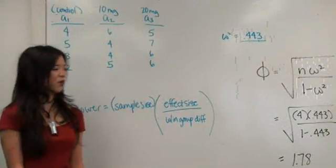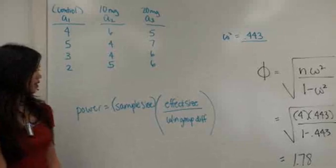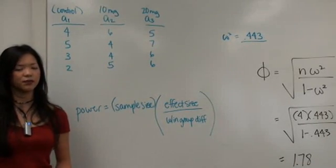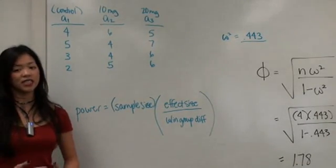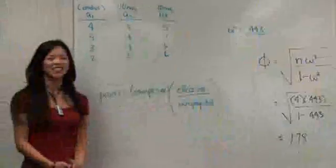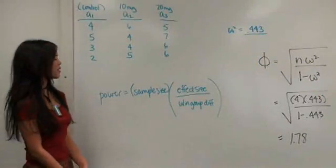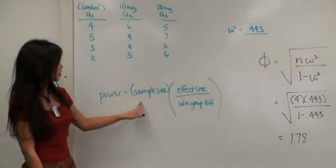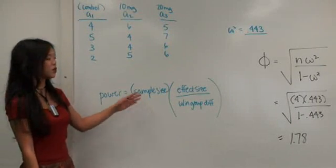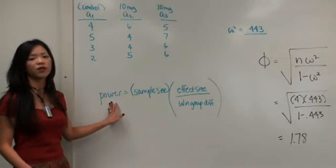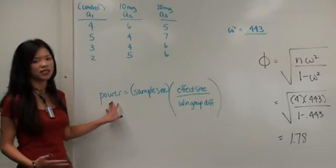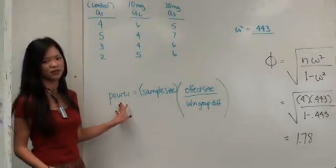This week we're talking about power, which actually relates to sensitivity — how sensitive is your test in being able to detect that you have a difference if you really have one? In statistics, there's a law of large numbers, which means that the greater your sample size, the more accurate you're likely to be, which relates to the more power you have, or the more sensitive your test is to detecting a difference if you really did have one.